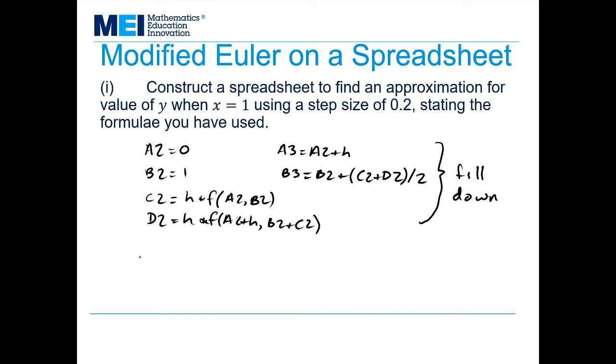And for my step size of h equals 0.2, I need to specify that the formula I used for f, f(x,y), is (x+y)/(y²). And this gave me the approximation that at x equals 1, I got y equals 1.90351, and that was to five decimal places.